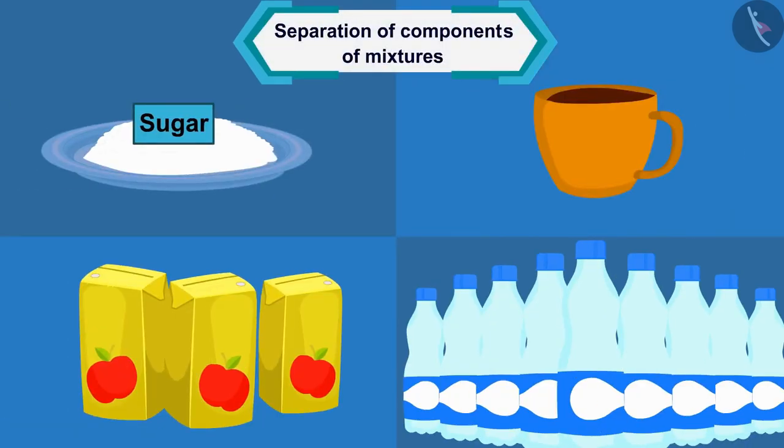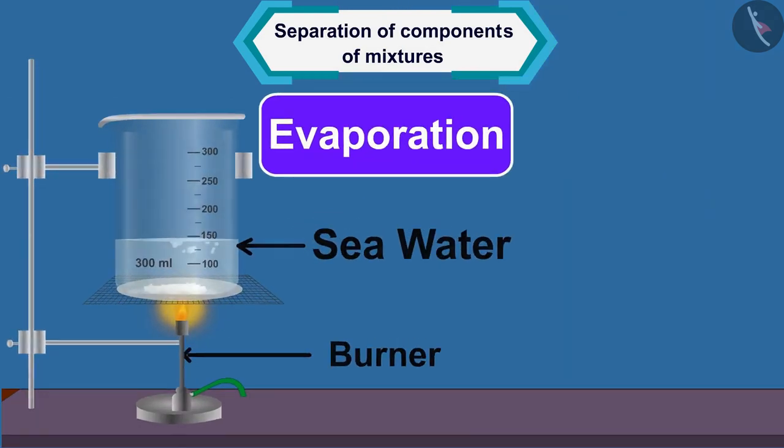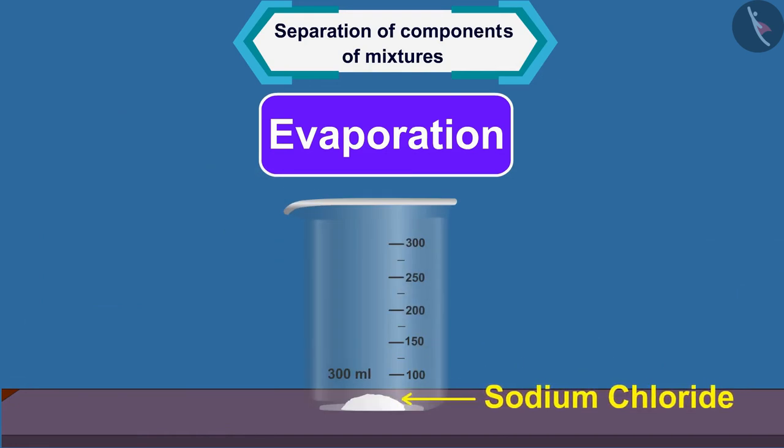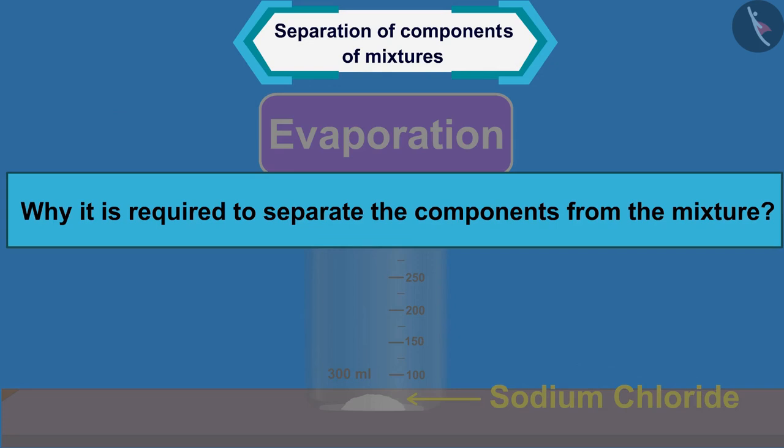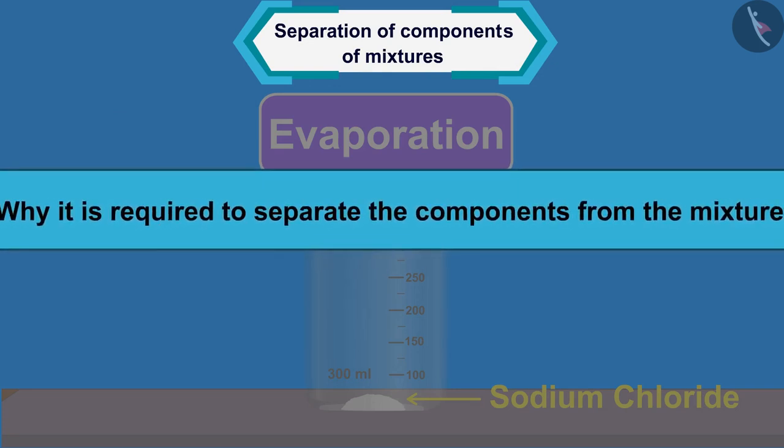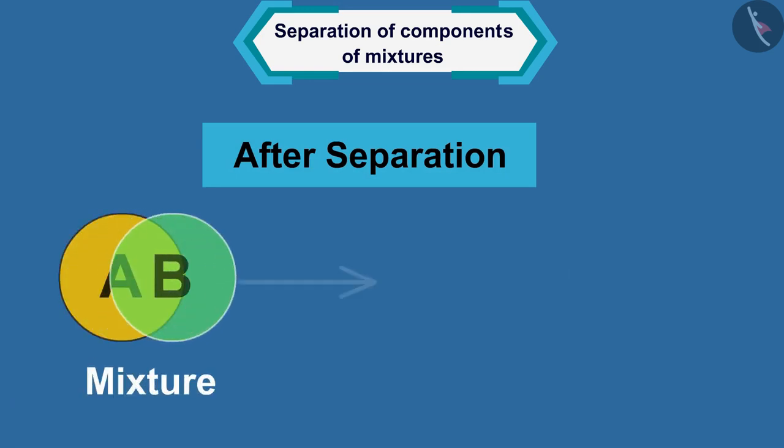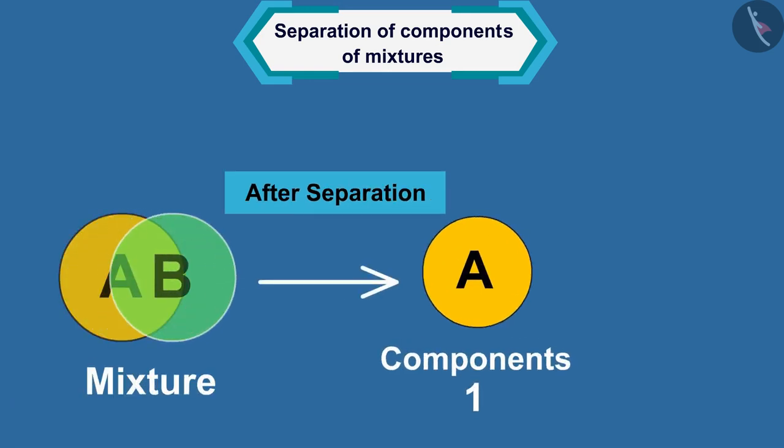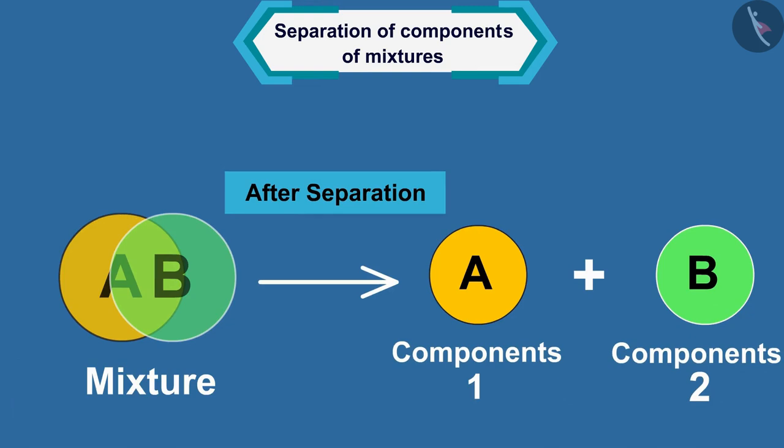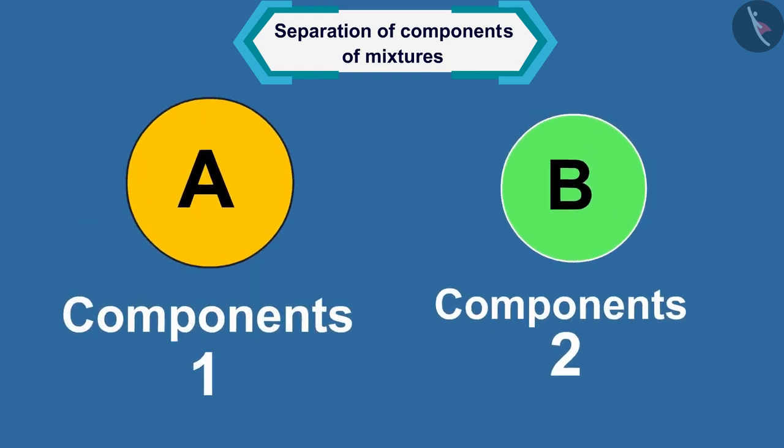As we know, most of the substances around us are found in the form of mixtures. A variety of methods are used to separate the components of these mixtures. But you may be wondering, why is it required to separate the components from the mixture? Separation makes it easy to obtain and use information about each component of the mixture.